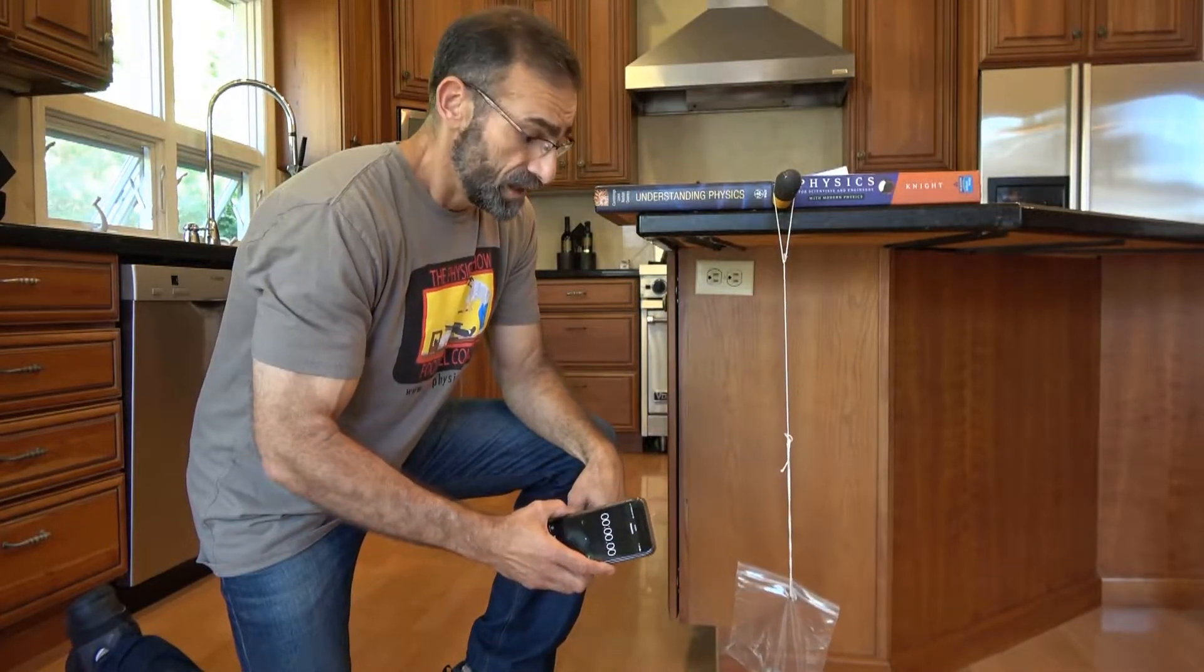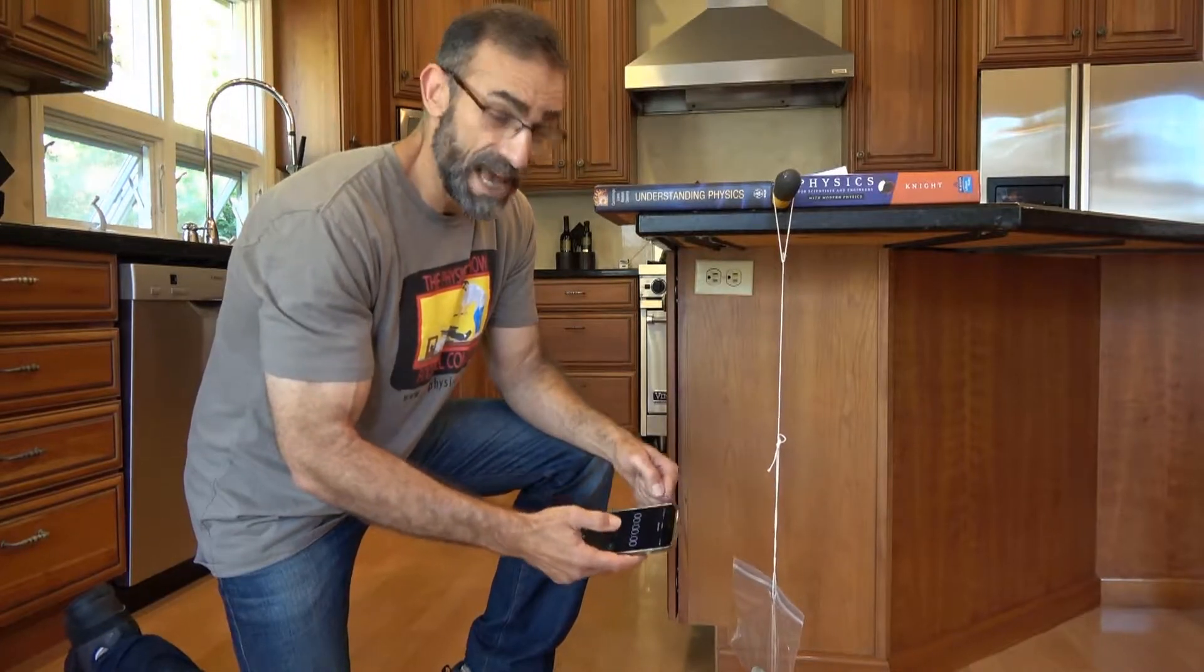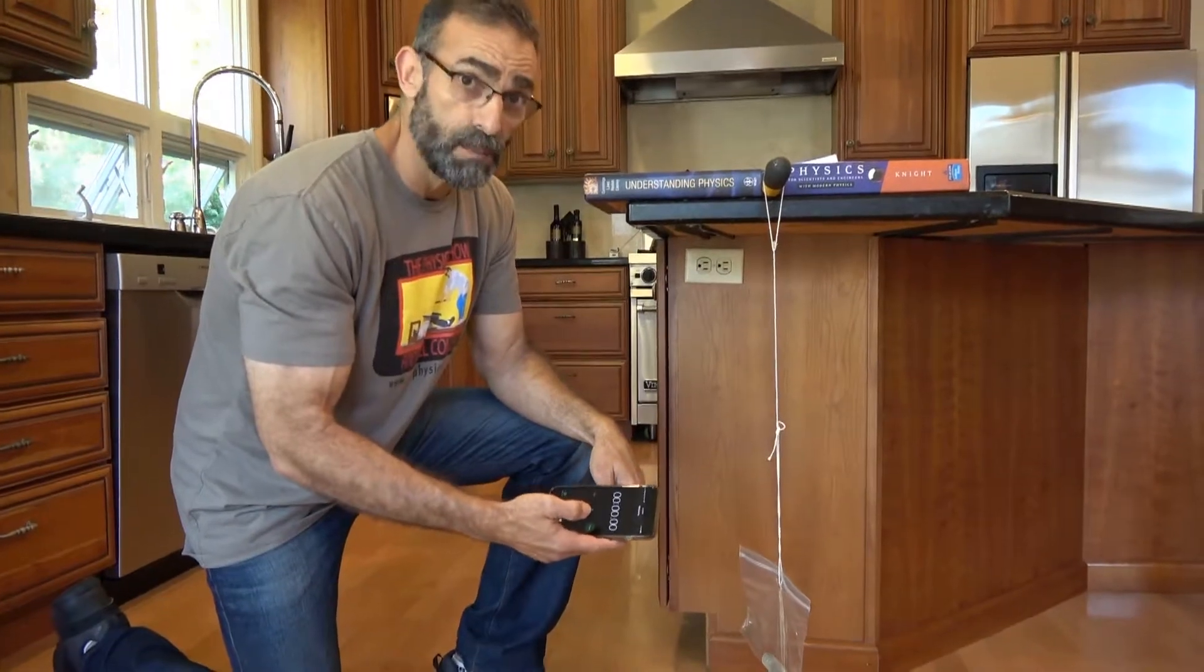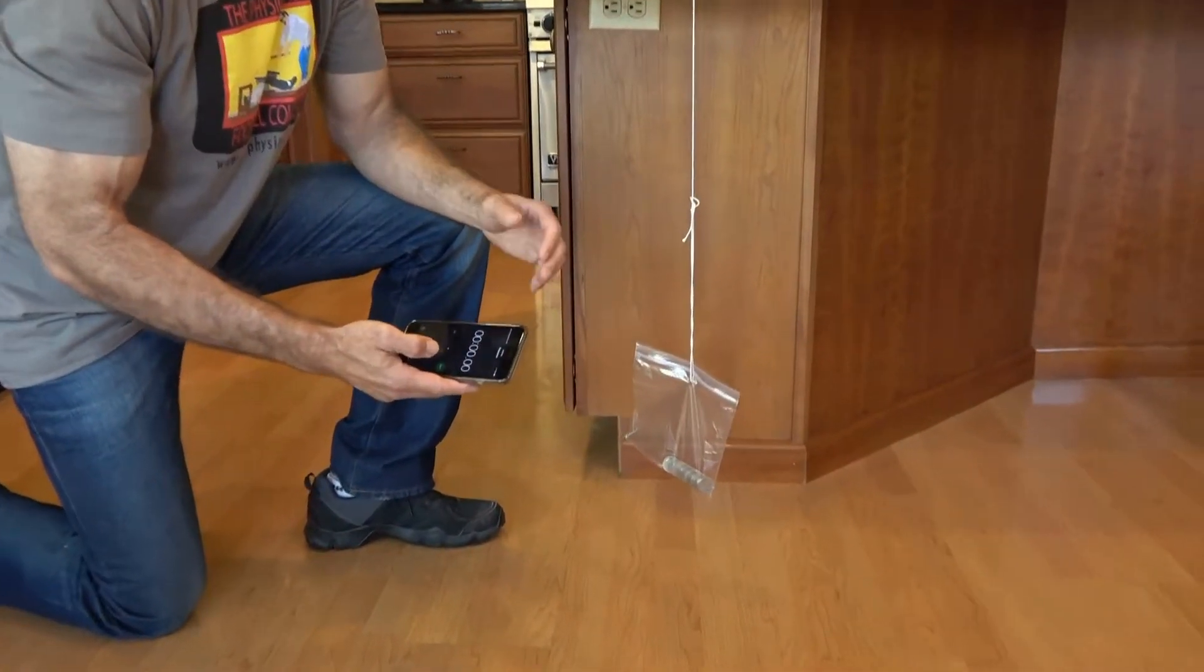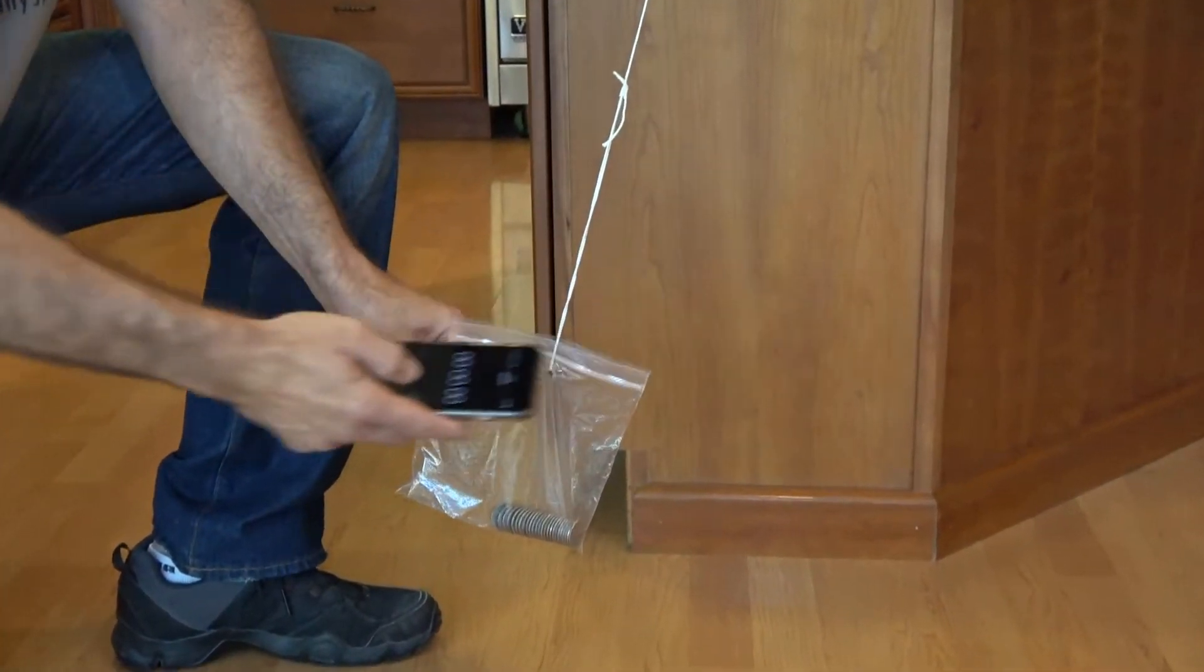Inaccuracies in measuring time come from reaction time—it takes you a little bit to hit the button on the stopwatch. One way to reduce that is to measure a longer time, so instead of measuring one cycle...